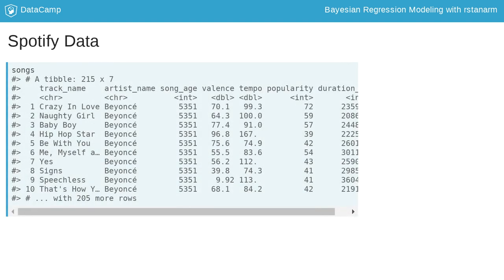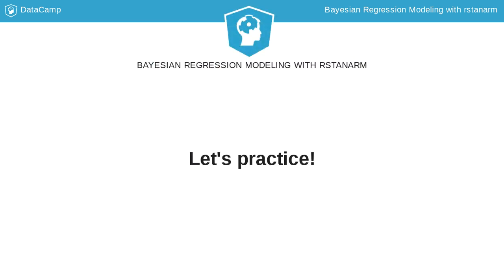For the exercises throughout this course, we'll be using data on Adele, Beyonce, and Taylor Swift songs from the Spotify API. This data includes the name and artist of each song, the age of the song in days, the valence or how positive or negative the song sounds, the tempo or speed of the song, the popularity according to Spotify, and the length of the song. Throughout this course, we'll predict the popularity from the other variables. Let's start with the frequentist approach.